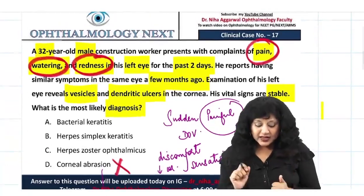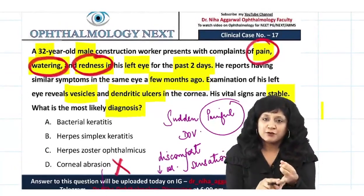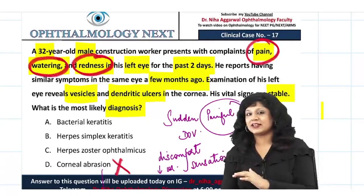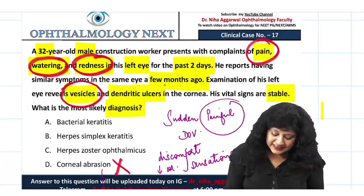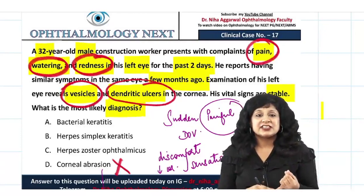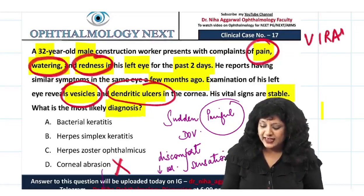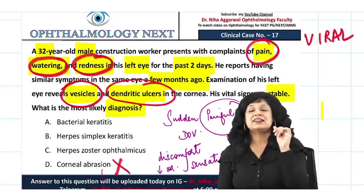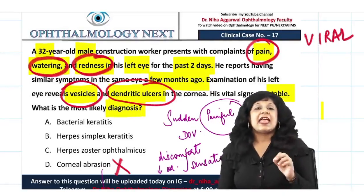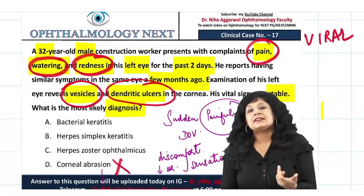Looking at the examination: pain, redness, and watering can occur in both bacterial and viral keratitis. However, the presence of vesicles and dendritic ulcers is key. Dendritic ulcers are very specific for viral keratitis — and specifically, dendritic keratitis is most characteristic of herpes simplex virus.